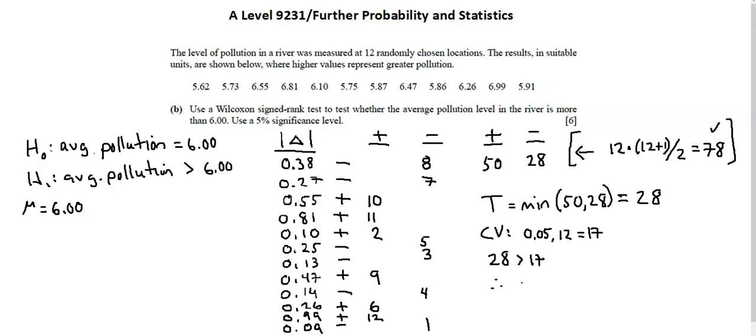What does that mean? That means insufficient evidence that median pollution is greater than 6.00. And this completes the requirements for question 1.